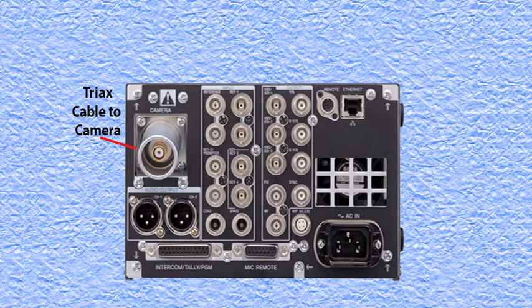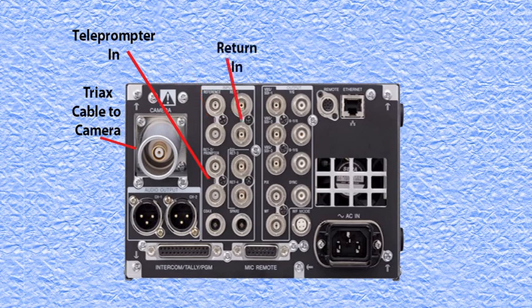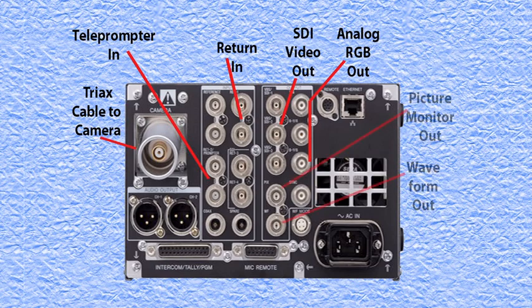The CCU and the studio camera are many times connected using a triax connector and cable. This is very much like a large RF cable that also carries power. The RF signal on the cable carries back and forth all the signals that the camera and the CCU share. Some of the other connections that the CCU provides to the camera are a teleprompter input, a return input which allows the camera operator to see a separate video feed from the production switcher, analog RGB output to be fed to specialized equipment, and a picture monitor and waveform monitor output to allow for easier shading and control of the camera's video output.